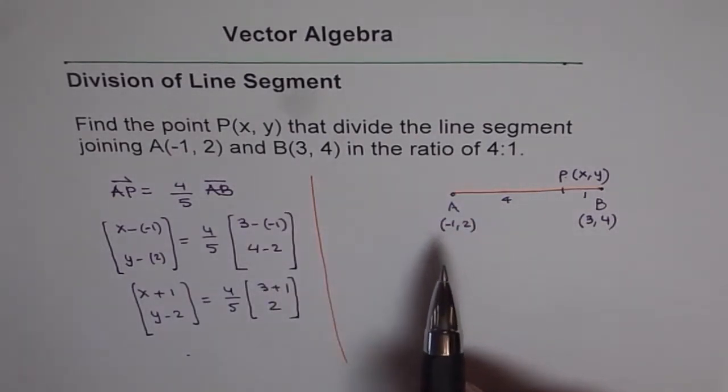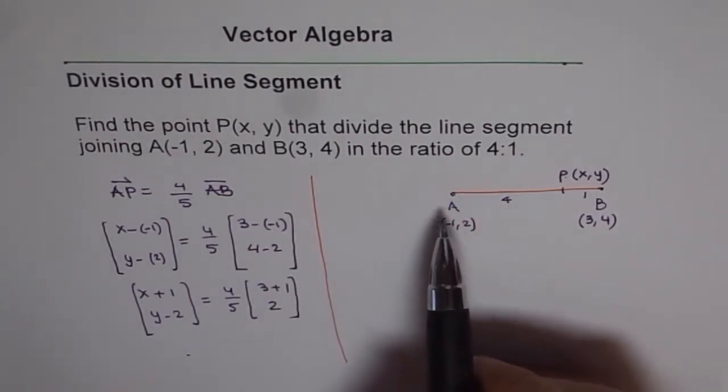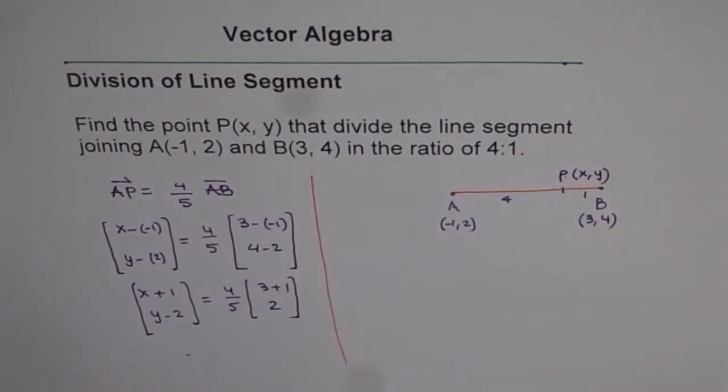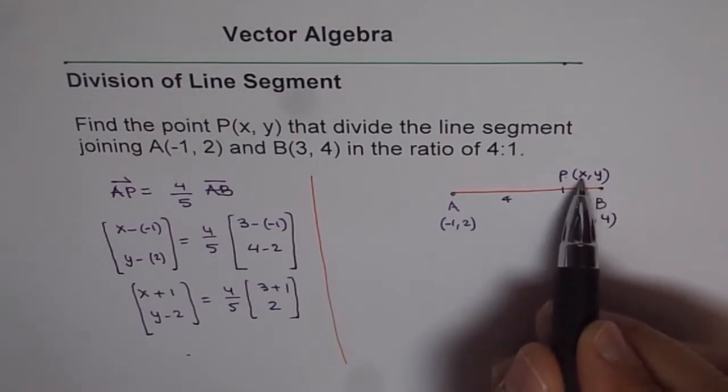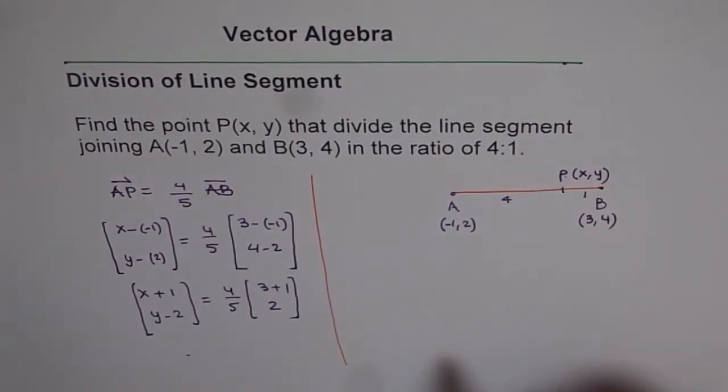That is the whole idea. If we would have written an equation in the form of AP and PB, it was slightly difficult for us because both sides will involve X and Y and it becomes difficult to solve the equation.